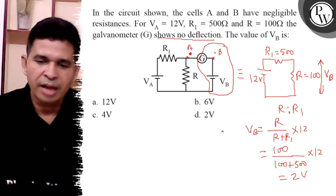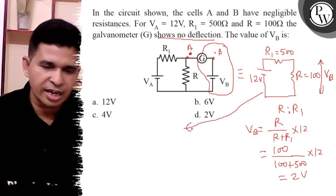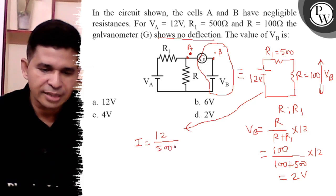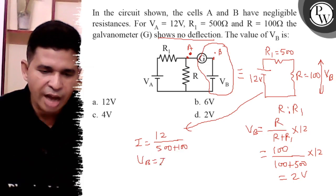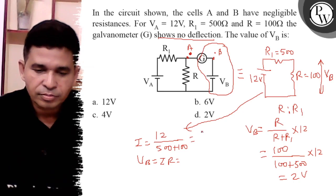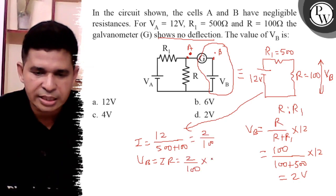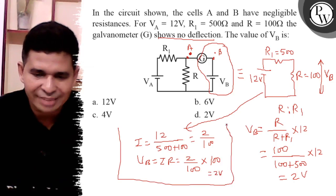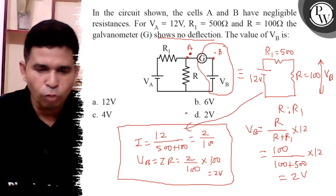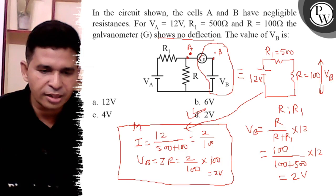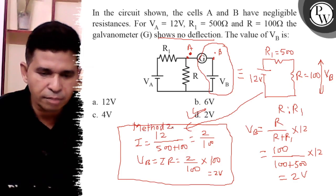Using another method: first find the current, I equals 12 divided by (500 plus 100) equals 12 by 600 equals 2 by 100. Then VB equals I into R equals (2 by 100) into 100 equals 2 volt. So the final answer is 2 volt.